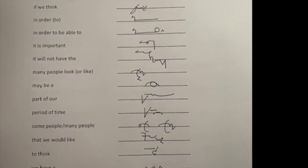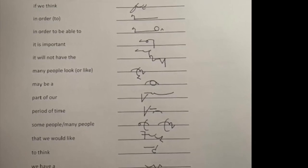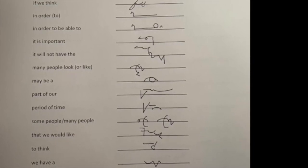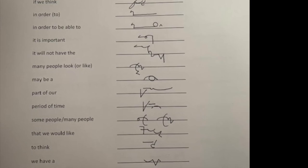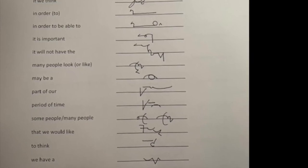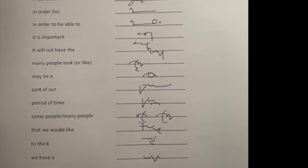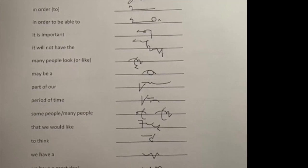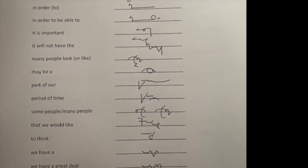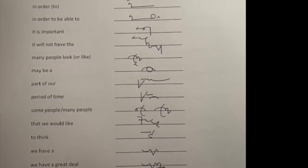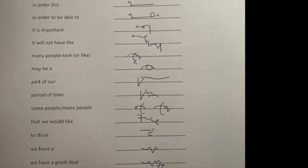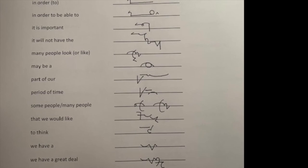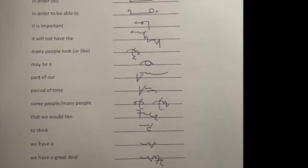Next one, may be A. Make sure that circle is big enough to be a B and put it inside the curve of the M and then join the little A on instead of doing it separately. Part of hour. T's disjoined after the upward R remember, little O for of and a long W for the hour. Period of time, you don't need the of, you can join it on to the D if you wish but period time should be sufficient. And then some people and many people, we know those well by now.